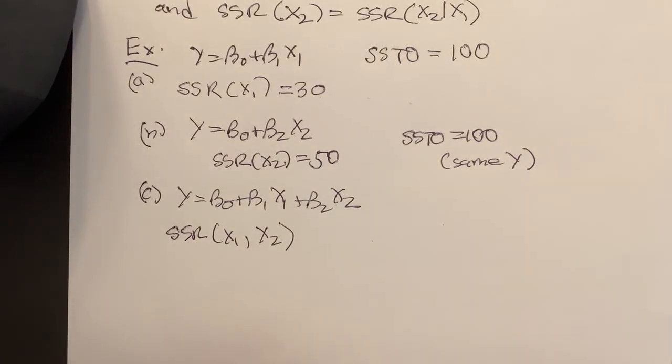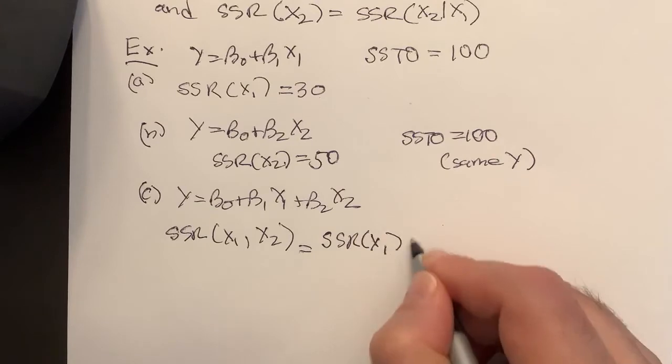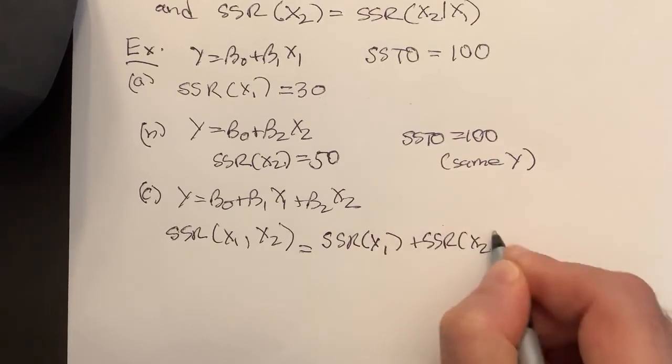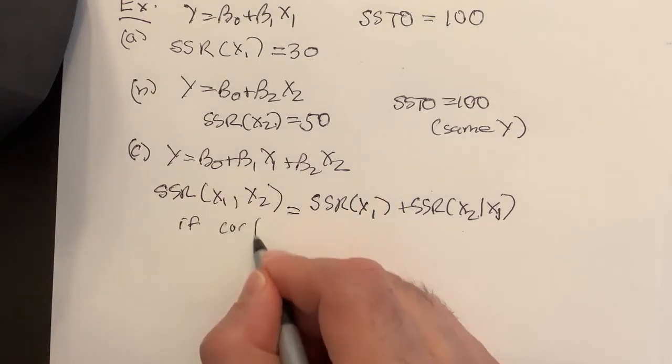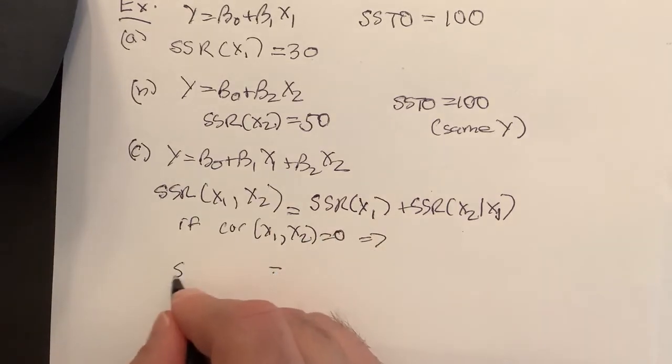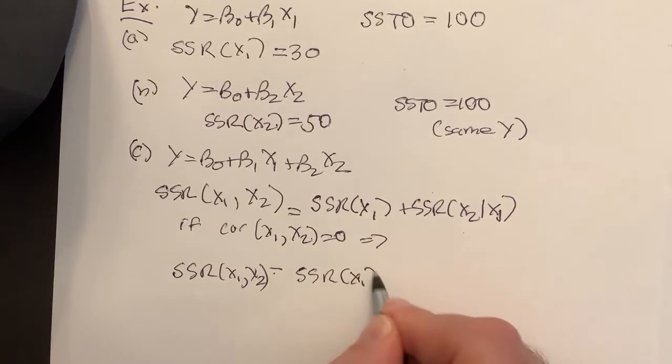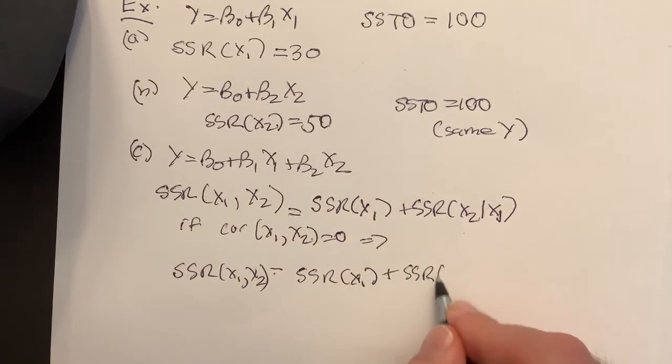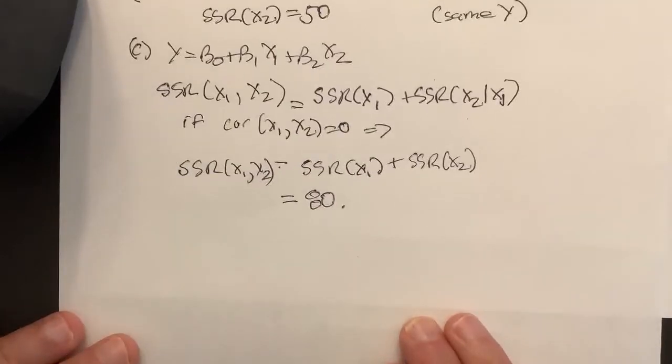What do you think? Well this is equal to, I could do it either way, I could say this is SSR(x1) plus SSR(x2|x1). That's always true by definition. And if uncorrelated, if correlation x1, x2 equals 0, then this is equal to SSR(x1) plus this becomes SSR(x2), so it should just equal 80. They will just be additive like this.